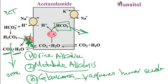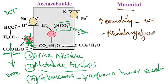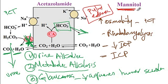Mannitol increases tubular fluid osmolarity and therefore prevents water reabsorption in the proximal convoluted tubule. It can be used to increase urine flow in patients with rhabdomyolysis, minimizing kidney injury from acute tubular necrosis. It can also decrease intraocular pressure and intracranial pressure. However, an important side effect is pulmonary edema, since mannitol increases extracellular fluid volume.